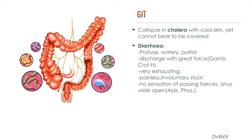The GIT conditions are mainly cholera and diarrhea. Cold skin with collapse in cholera, yet the patient cannot bear to be covered. Very exhausting, painless, involuntary diarrhea with no sensation of passing faeces. Anus wide open — in this condition other remedies are Apis and Phosphorus. Discharges in diarrhea are with great force, also profuse, watery, and putrid.